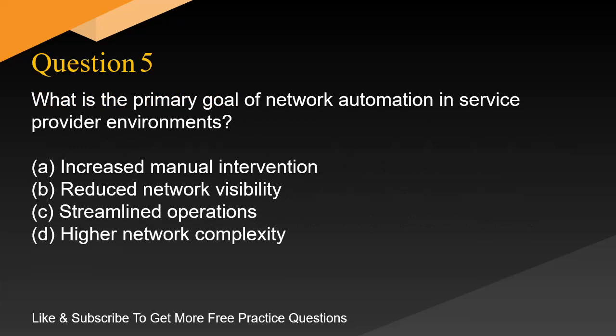Question 5. What is the primary goal of network automation in service provider environments? A. Increased manual intervention. B. Reduced network visibility. C. Streamlined operations. D. Higher network complexity.